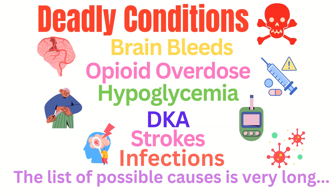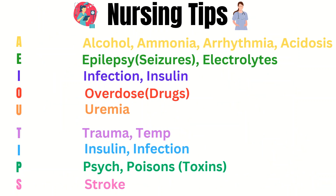Luckily, there is a mnemonic that is very helpful in remembering some of the big causes. The mnemonic is AEIOU TIPS. Starting with A: alcohol, then epilepsy, infection, overdose, uremia, trauma, insulin, psych, and strokes. So the next time you have a patient with altered mental status and you are struggling to remember the important conditions, keep in mind the mnemonic AEIOU TIPS.